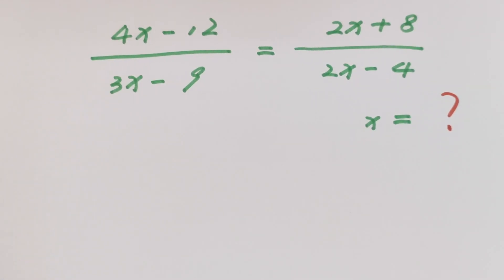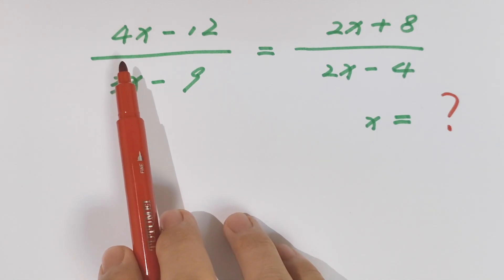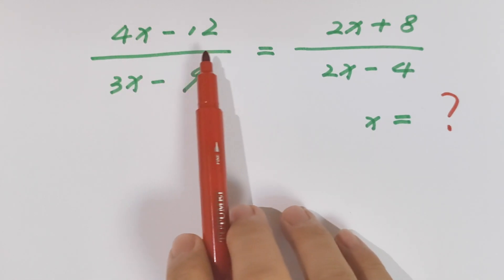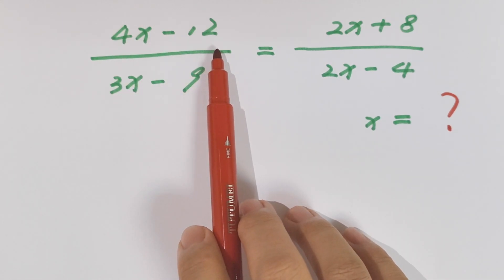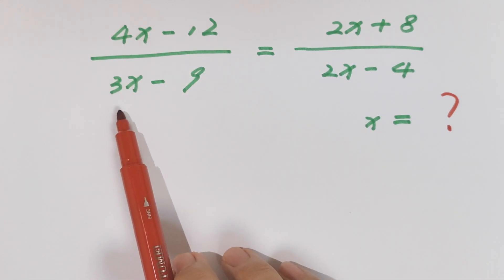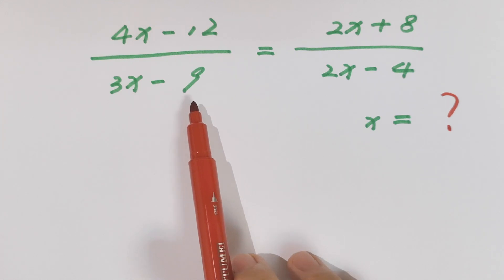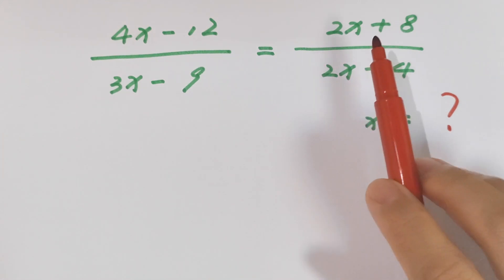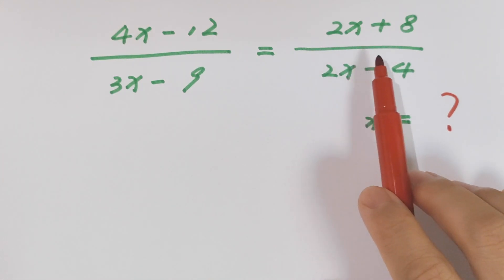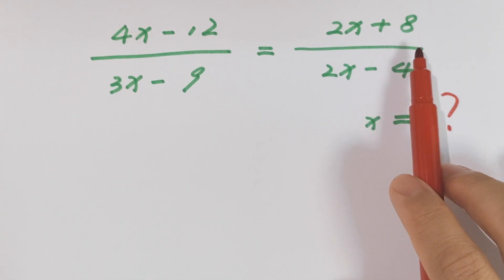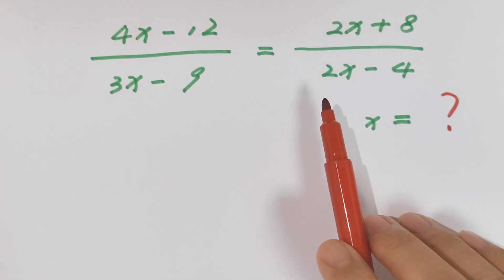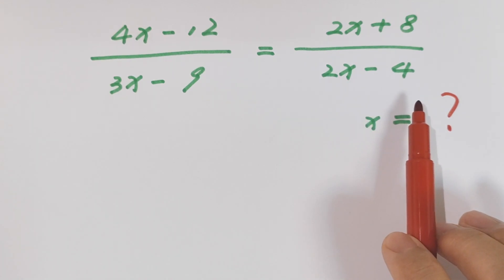Hello everyone, welcome to Math4U. How to solve: 4x minus 12 divided by 3x minus 9 equals 2x plus 8 divided by 2x minus 4.